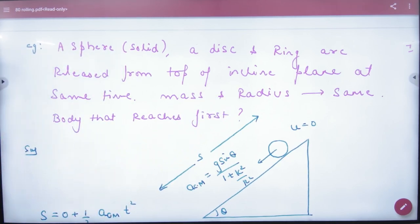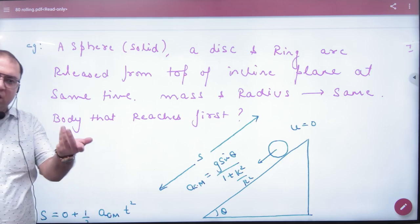When it comes down, mass and radius are all the same. The question is, who is the first one and who is the last one? The mass and radius are all the same, so we will not know immediately.